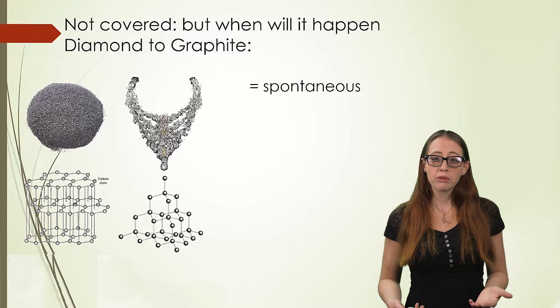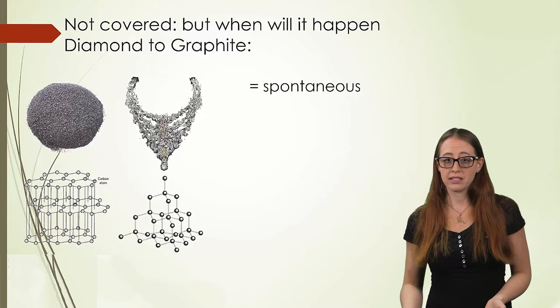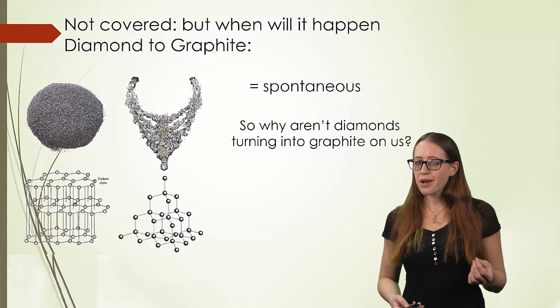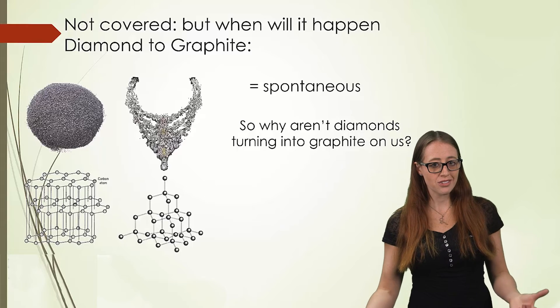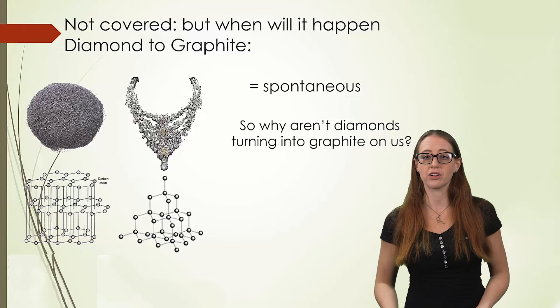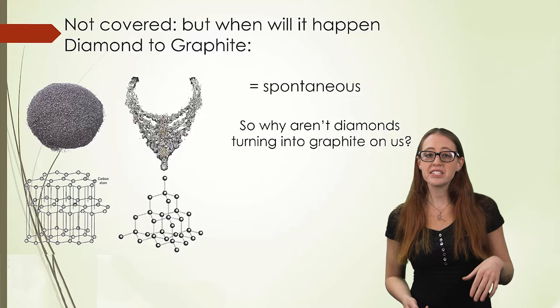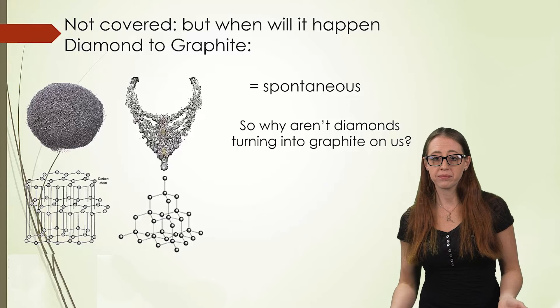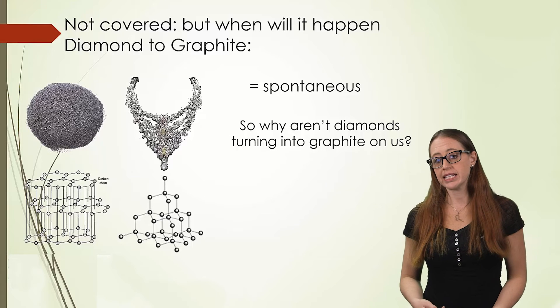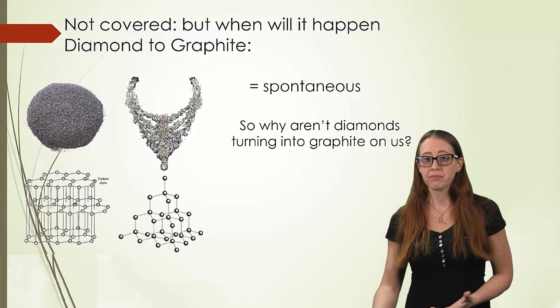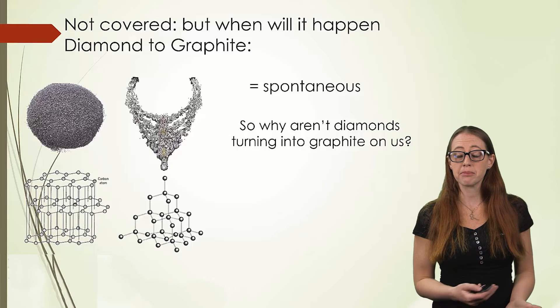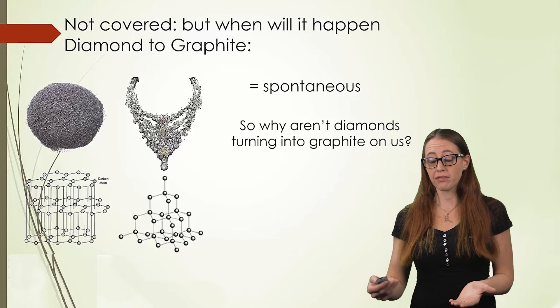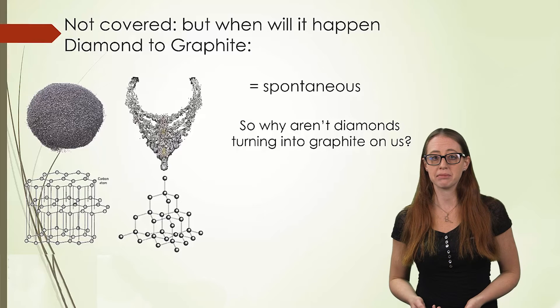By the end of the chapter, we will be able to determine that a diamond turning into graphite is spontaneous. Yet we know that our diamonds certainly are not turning into pencil lead before our very eyes. And this is because it happens so slowly that it doesn't affect us on a human timescale. We won't be covering these kinetics until much, much later, but it's worth bringing up here that it plays a role in how we see things, even if our math tells us that something might be spontaneous.